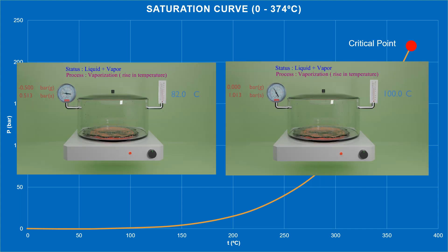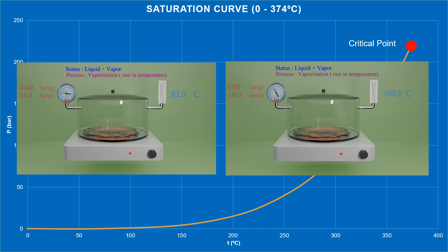For example, we need 80 degrees Celsius to reach a pressure of half a bar, while we need an additional 20 degrees Celsius to reach 1 bar.